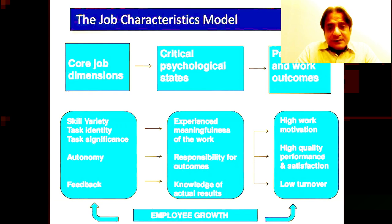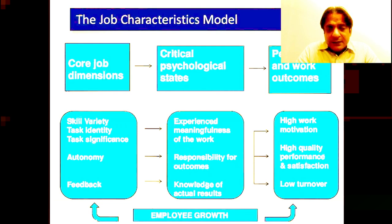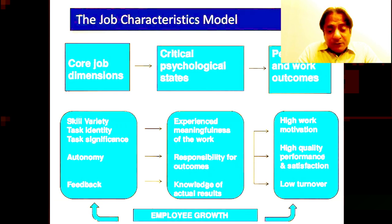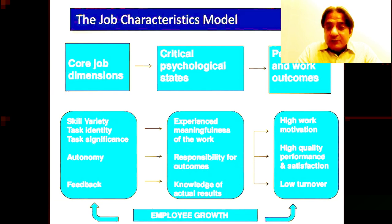Regarding knowledge of actual results: feedback comes in two ways — one through the annual performance appraisal system, which is linked to the reward system, and the other is a continuous feedback system. It is very important to give feedback to employees to set their direction properly and to give them very true and rational feedback. If they are lacking in some skills or job attributes, you need to give them honest advice so they can make up for it and contribute effectively within the organization.